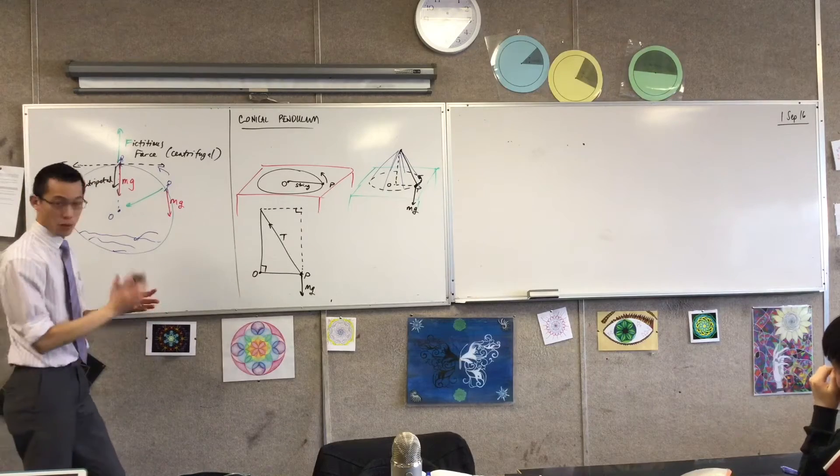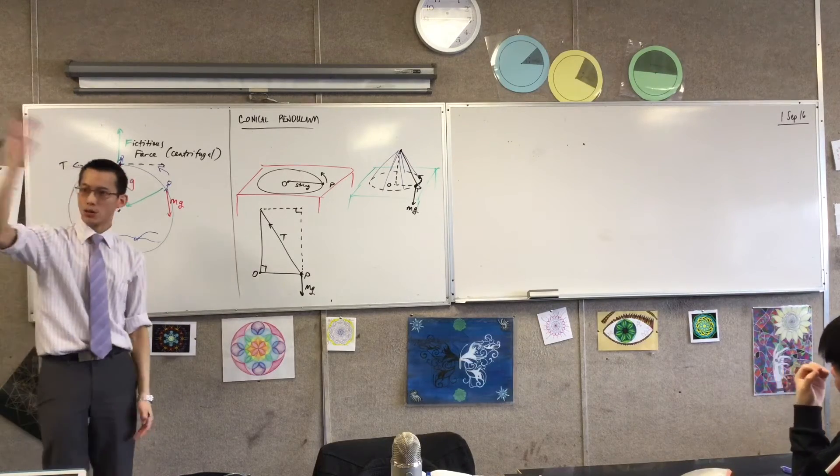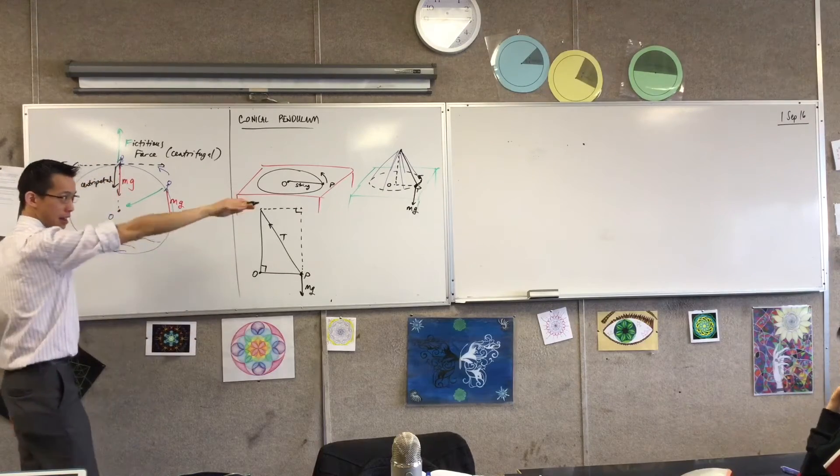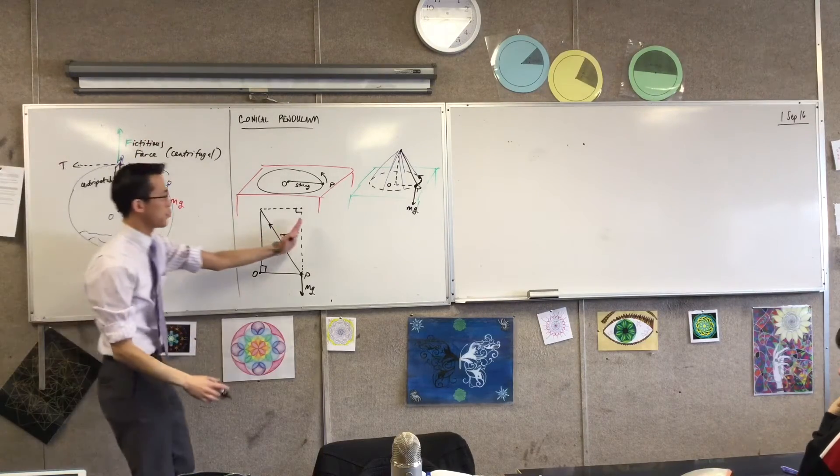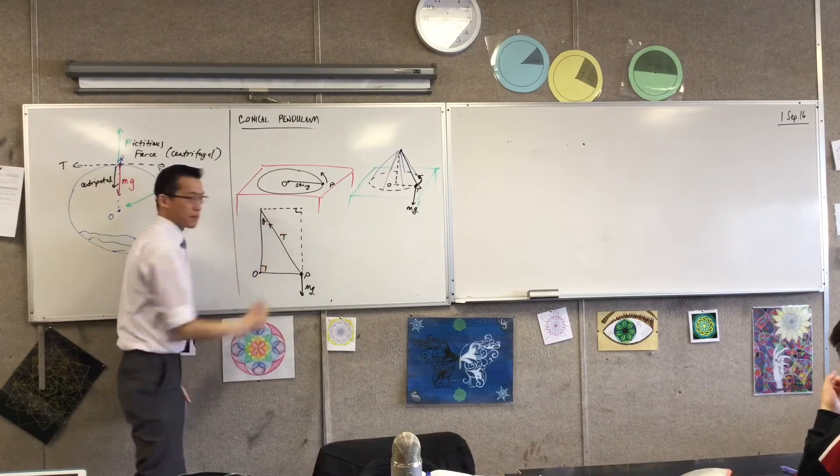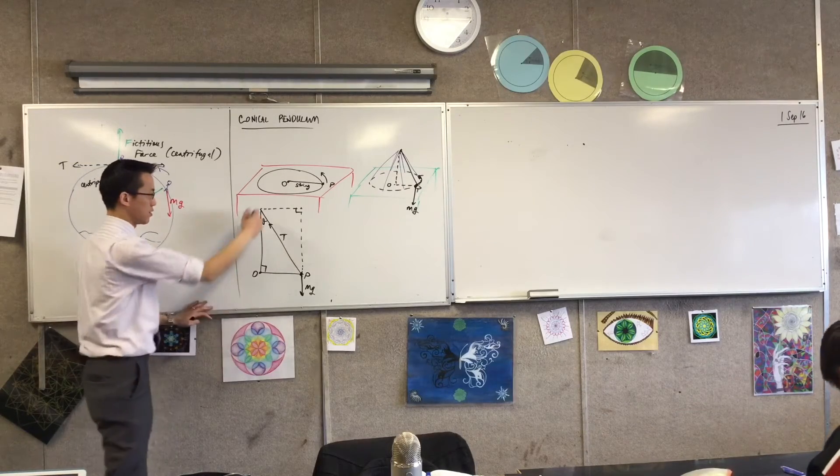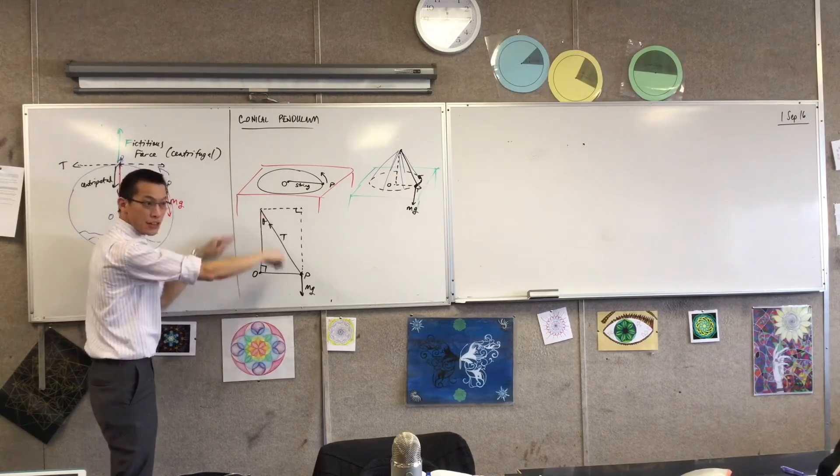Now, to work out everything, remember with projectile motion, I said, if you're going to resolve forces, you need to know, of course, what angle you're facing in. Because if you fire in that angle versus that angle versus that angle, you will get different amounts contributing to vertical or horizontal. So this angle up the top, we tend to call theta. It's often called the semi-vertical angle because you're sort of half of this cone.